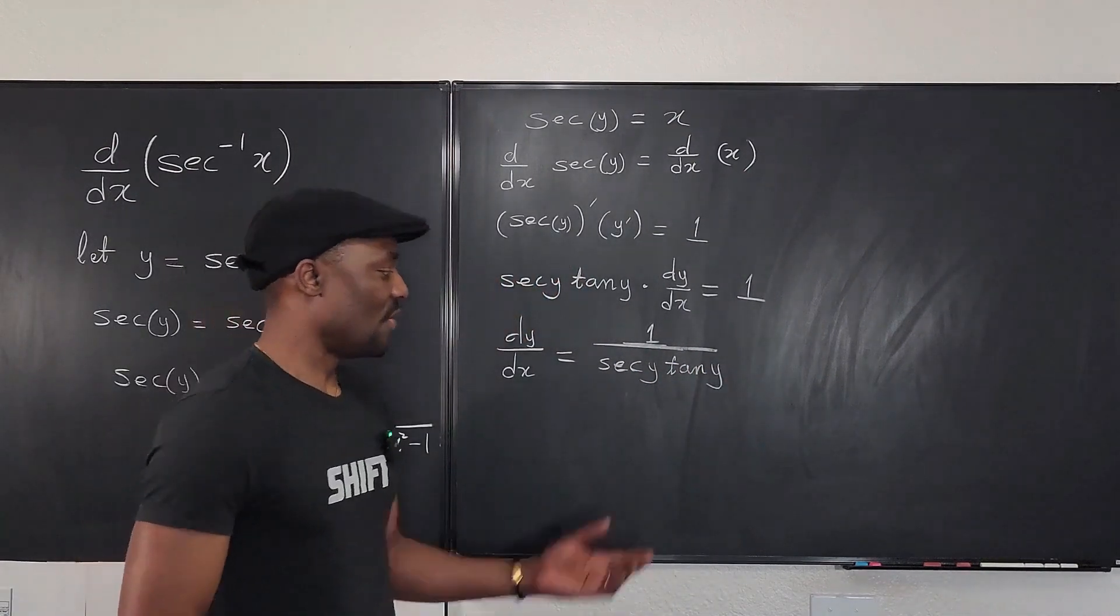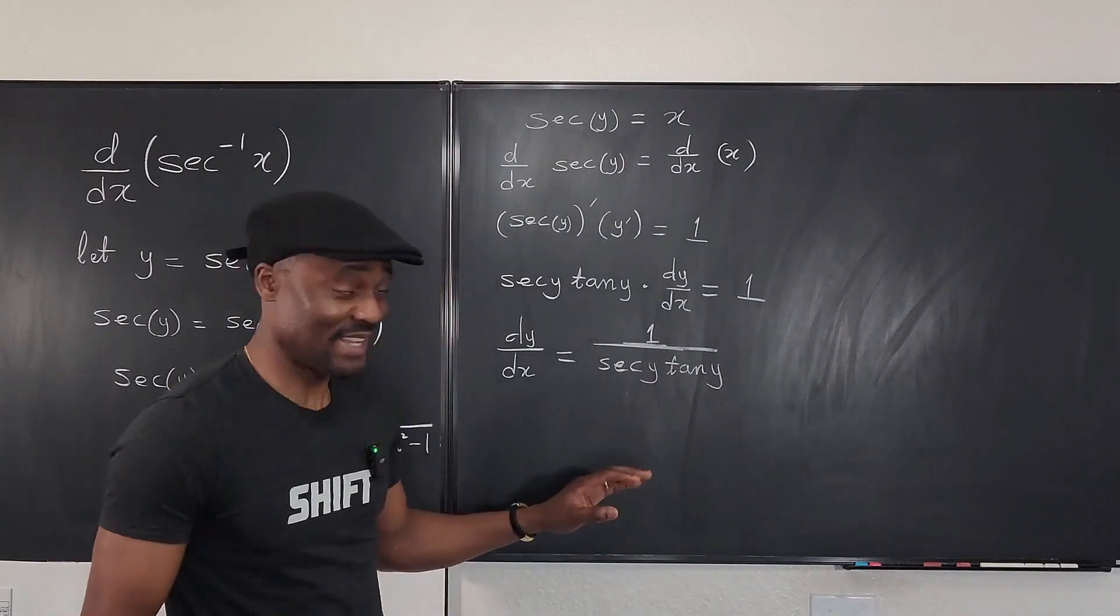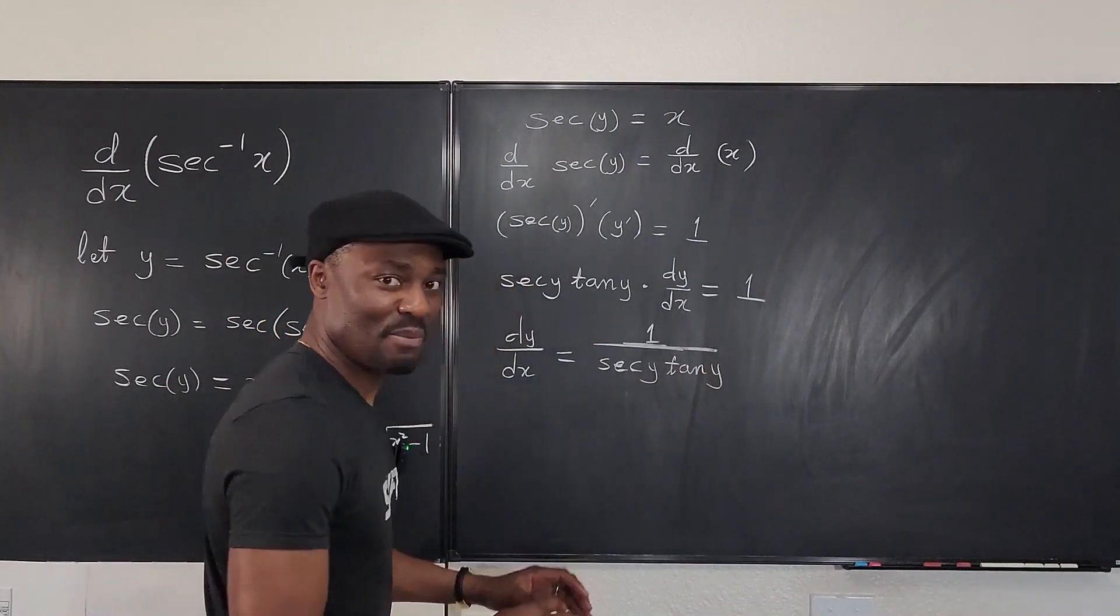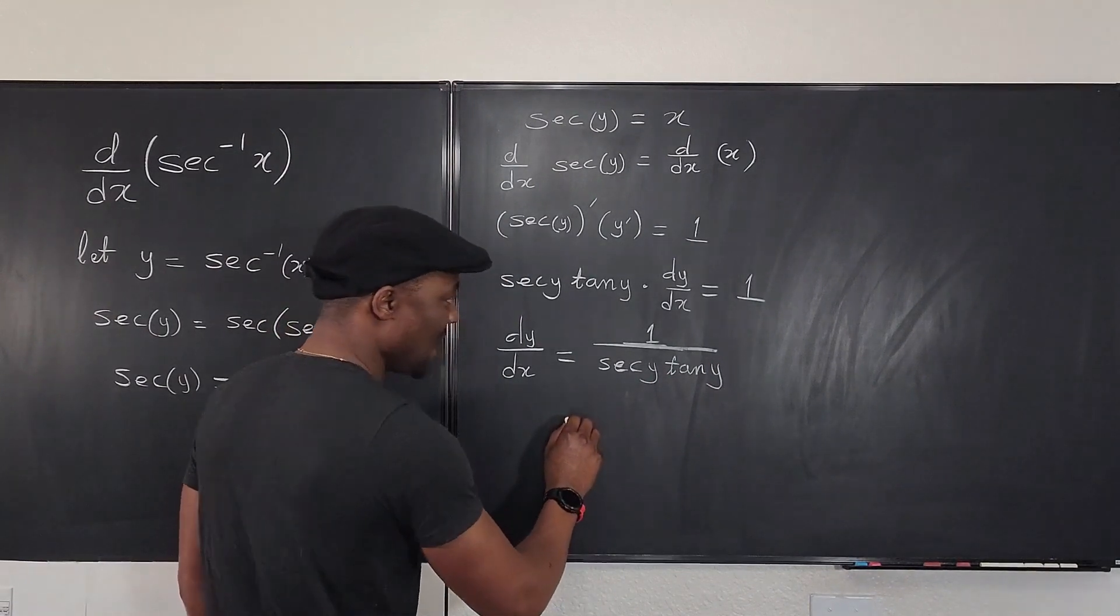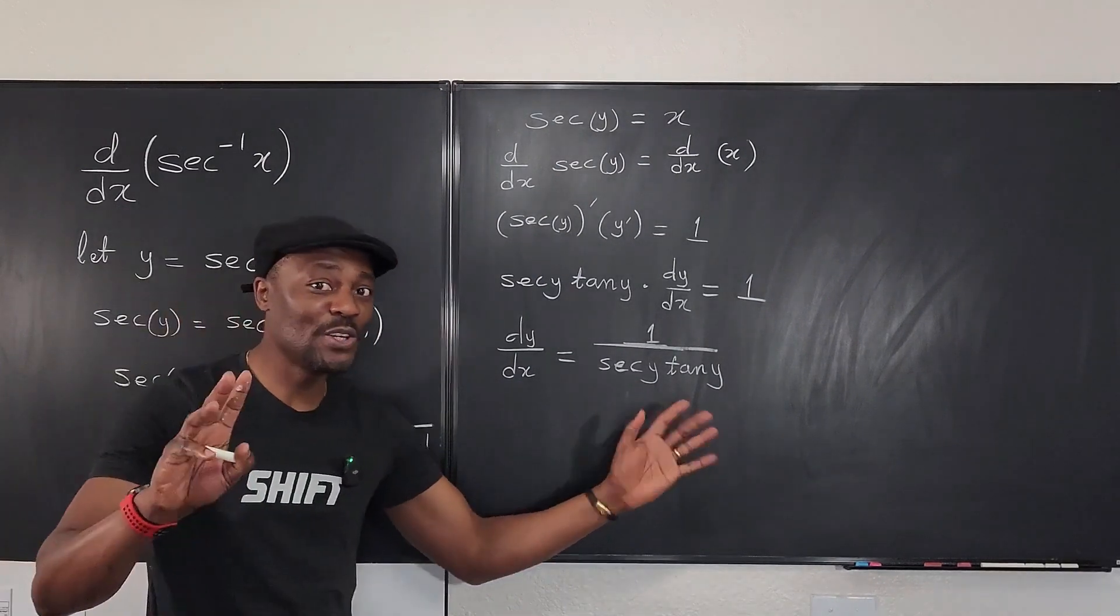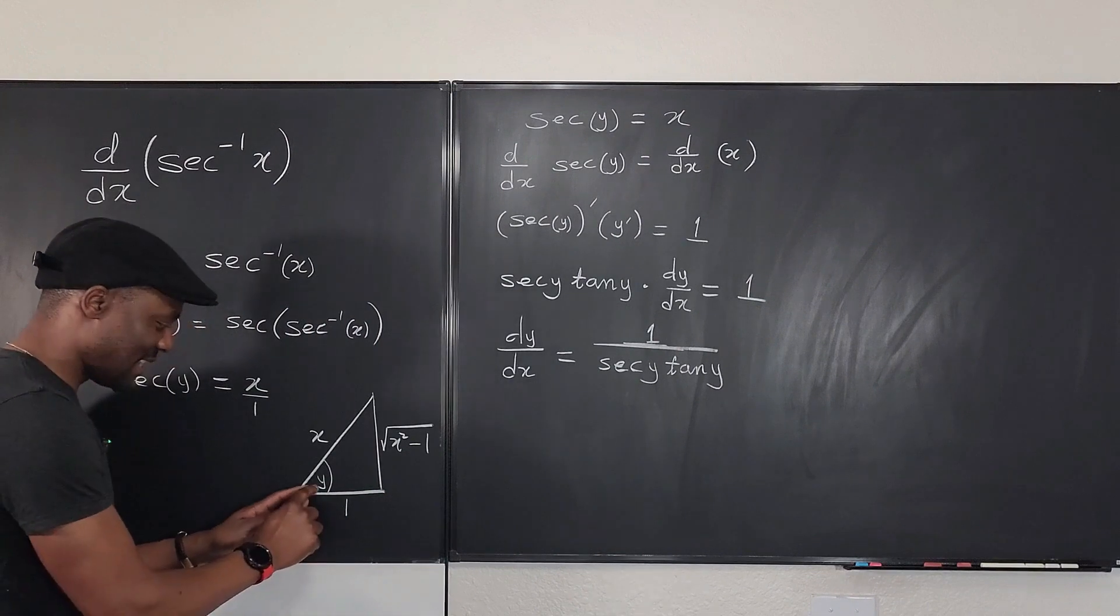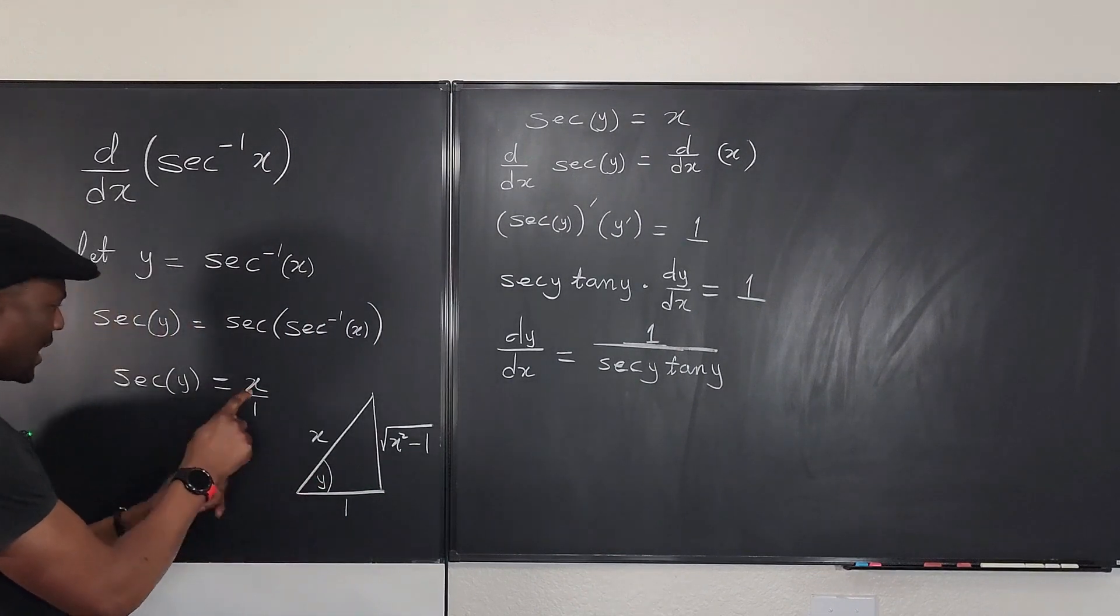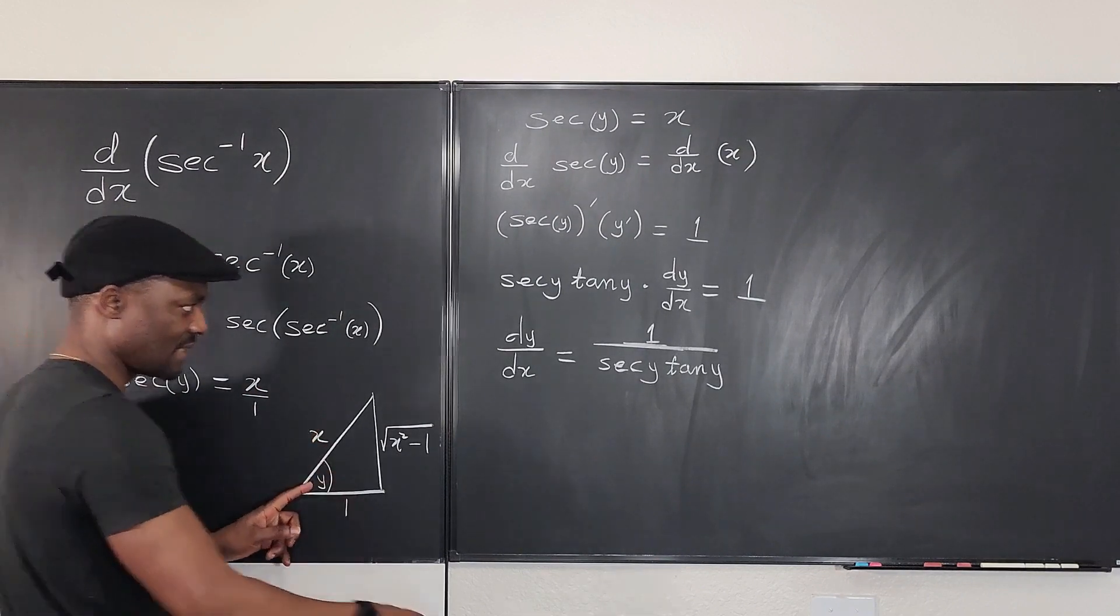Well, we would always hope that secant y tan y will not be zero, okay, in this case, but that's not the important thing—we're just differentiating. At this point, what do we get? What is secant y? See, now you no longer struggle because the triangle is there to provide everything. What is the secant of y? I think we got it—it was x, right? So secant y is hypotenuse over adjacent, that's going to be x.